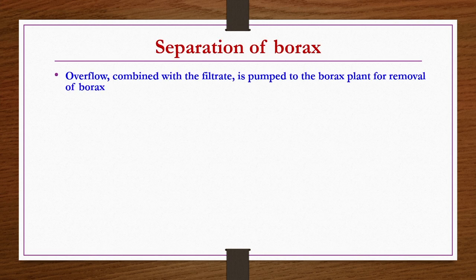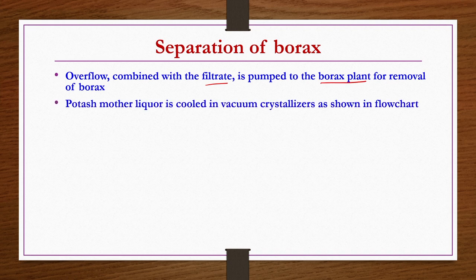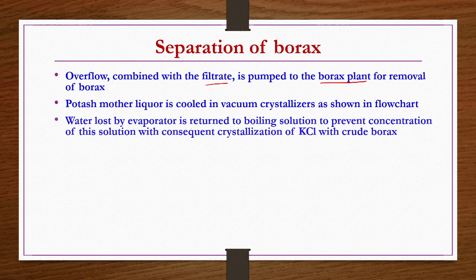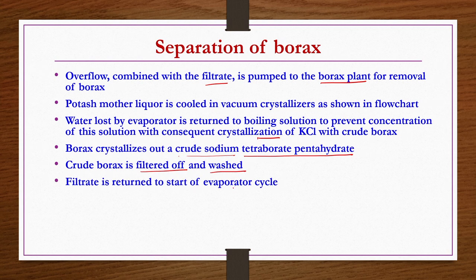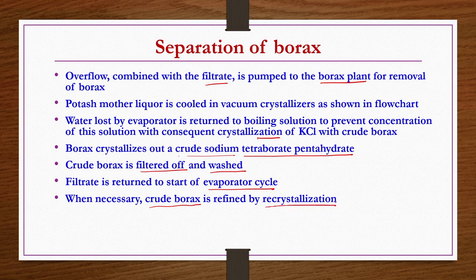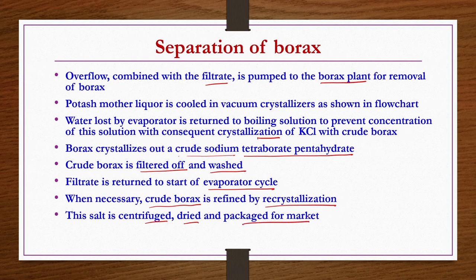Hot concentrated liquor leaving the clarifiers, saturated with KCl and borax, has KCl obtained by cooling quickly to 38°C and crystallizing in three-stage vacuum cooler crystallizers. Enough water is added to replace that evaporated so that NaCl remains in solution. The suspension of solid KCl in mother liquor passes to a cone settler; the thickened sludge is obtained as underflow. KCl is dried in rotary dryers yielding 97 percent KCl — fertilizer-grade potash — then conveyed to storage, bagging plant, or a re-crystallizing procedure as required. The remaining liquor is then rich in borax, processed to get crude or refined borax.